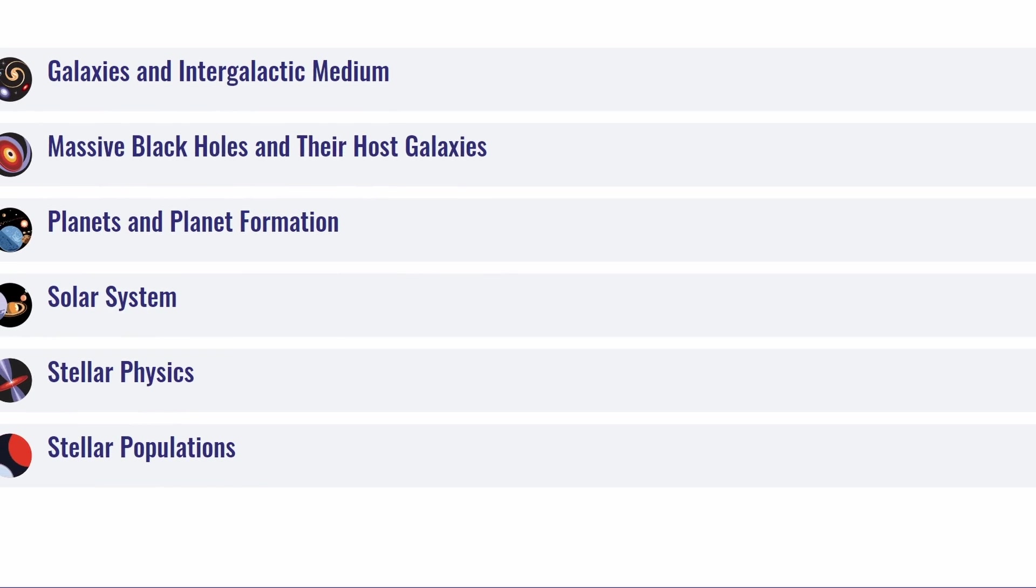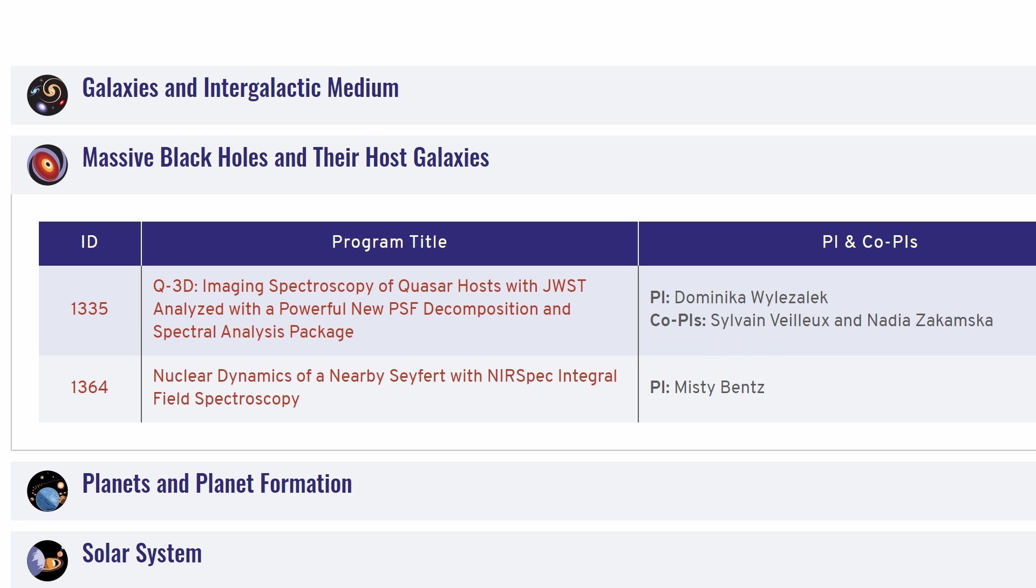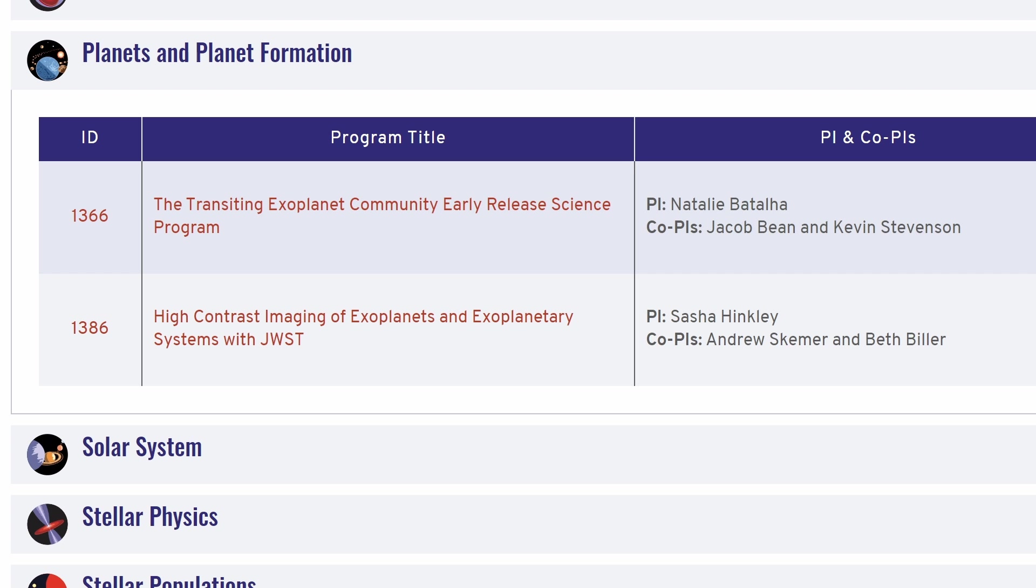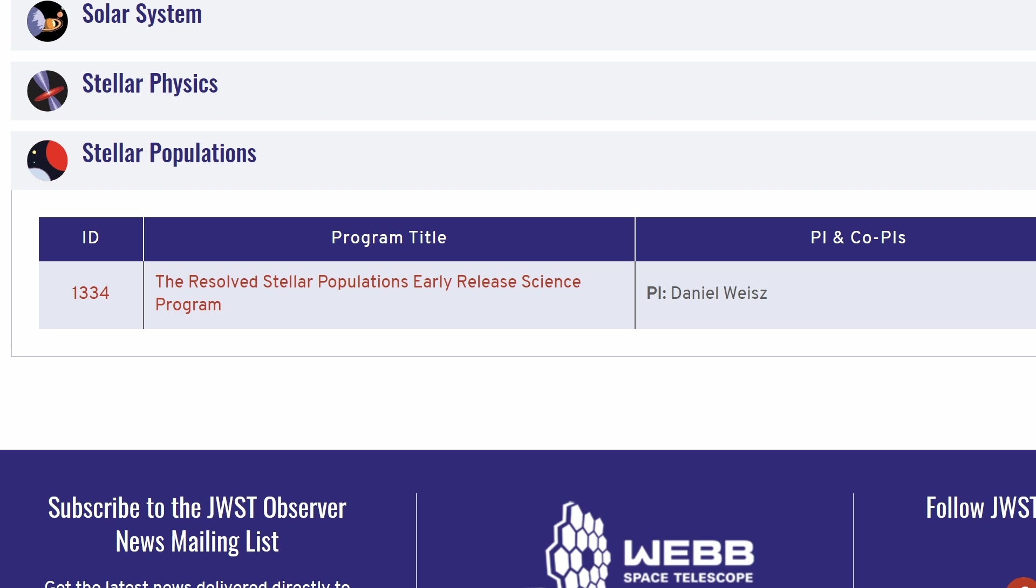But in essence there are six main topics. We have galaxies and intergalactic medium with four proposals visible right here. Massive black holes and host galaxies. Planets and planet formation. Solar system. Stellar physics. And stellar populations.